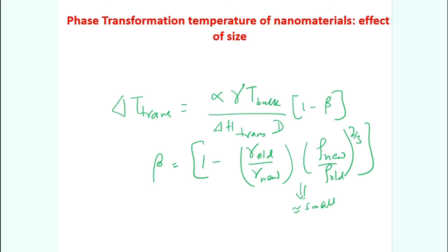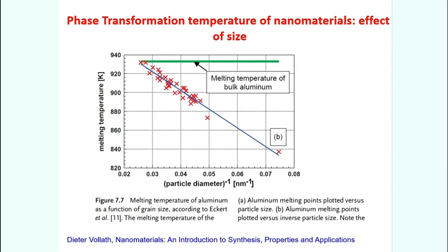This is all we discussed in the last couple of lectures. The thermodynamic descriptions are very extensive — you need to study well from the books and papers I will provide as a repository. This equation has been used to plot the change of melting temperature as a function of 1/diameter for pure aluminum, and most experimental points follow the theoretical curve very well.